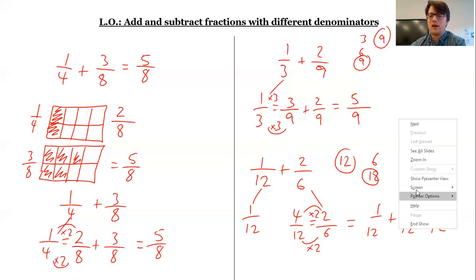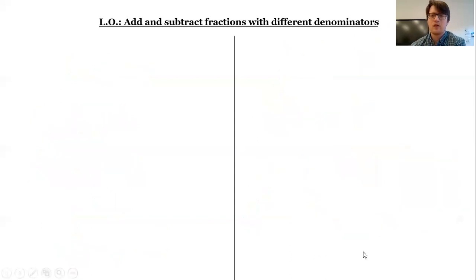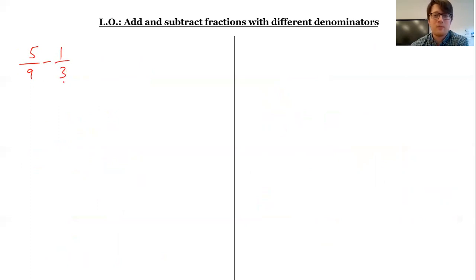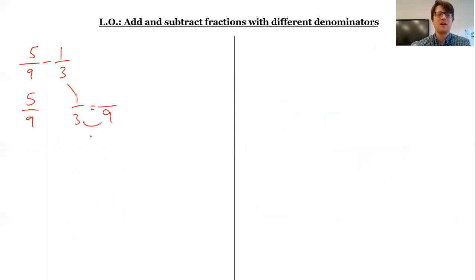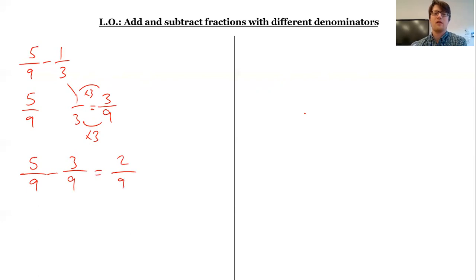It'd be exactly the same if we decided that we were going to subtract instead. So if I wanted to subtract — five ninths subtract one third — again I need to make sure my denominators are the same. What's the lowest common denominator? It's going to be nine; three is a factor of nine. So five ninths can stay as it is. One third is going to become the equivalent fraction with nine as a denominator: to get from three to nine, times by three — remember, always multiplying, not adding or subtracting — the same at the top. So one third is the same as three ninths. Five ninths subtract three ninths gives me two ninths.